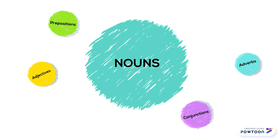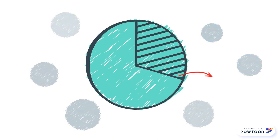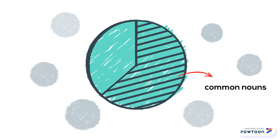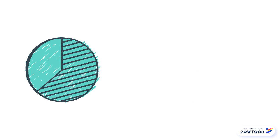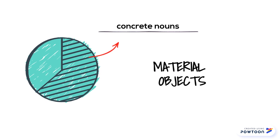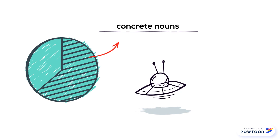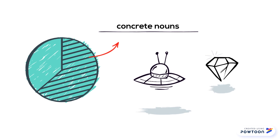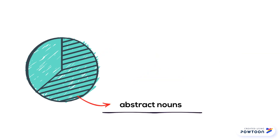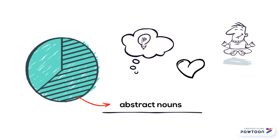Nouns are the largest word class. Most nouns are common nouns, which refer to categories of people, animals, and things. Among them, there are also the concrete nouns, that refer to material objects which you can see or touch, and the abstract nouns, that refer to things such as ideas, feelings, and situations.